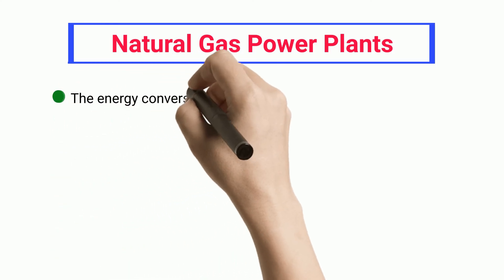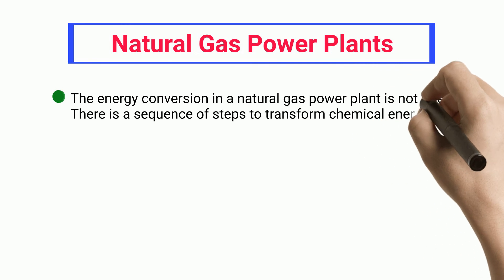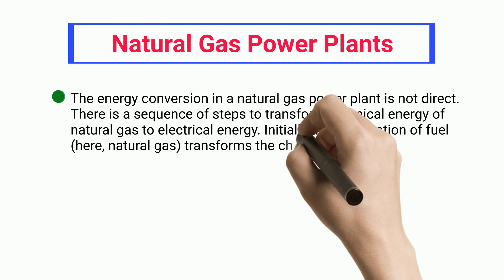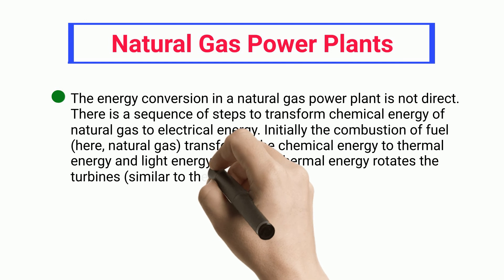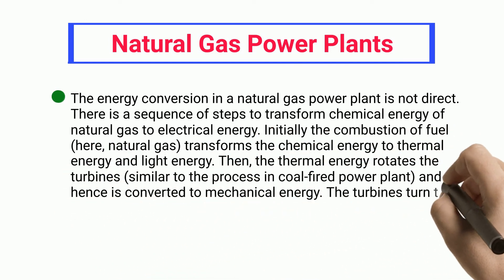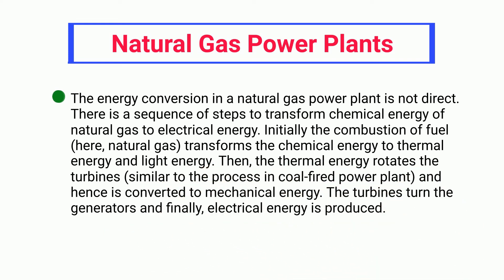The energy conversion in a natural gas power plant is not direct. There is a sequence of steps to transform the chemical energy of natural gas to electrical energy. Initially, the combustion of fuel — here, natural gas — transforms the chemical energy to thermal energy and light energy. Then, the thermal energy rotates the turbines, similar to the process in a coal-fired power plant, and hence is converted to mechanical energy. The turbines turn the generators and finally electrical energy is produced.